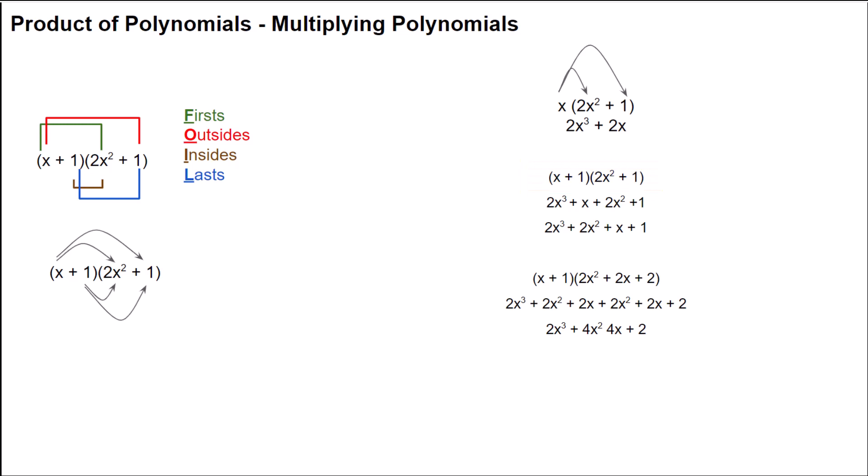There's a mnemonic used quite a bit in algebra that you may remember from high school. It's called FOIL, and it stands for Firsts, Outsides, Insides, and Lasts. It's supposed to help you remember how to use the distributive property to multiply two polynomials together.